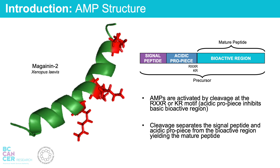In addition to secondary structure, AMPs also have a conserved peptide structure of three parts: signal peptide, acidic propeptide, and bioactive region. This whole sequence is referred to as an AMP precursor. The AMP is activated when the signal and propeptide have been cleaved off at the arginine and lysine cleavage motifs, yielding only the mature peptide.